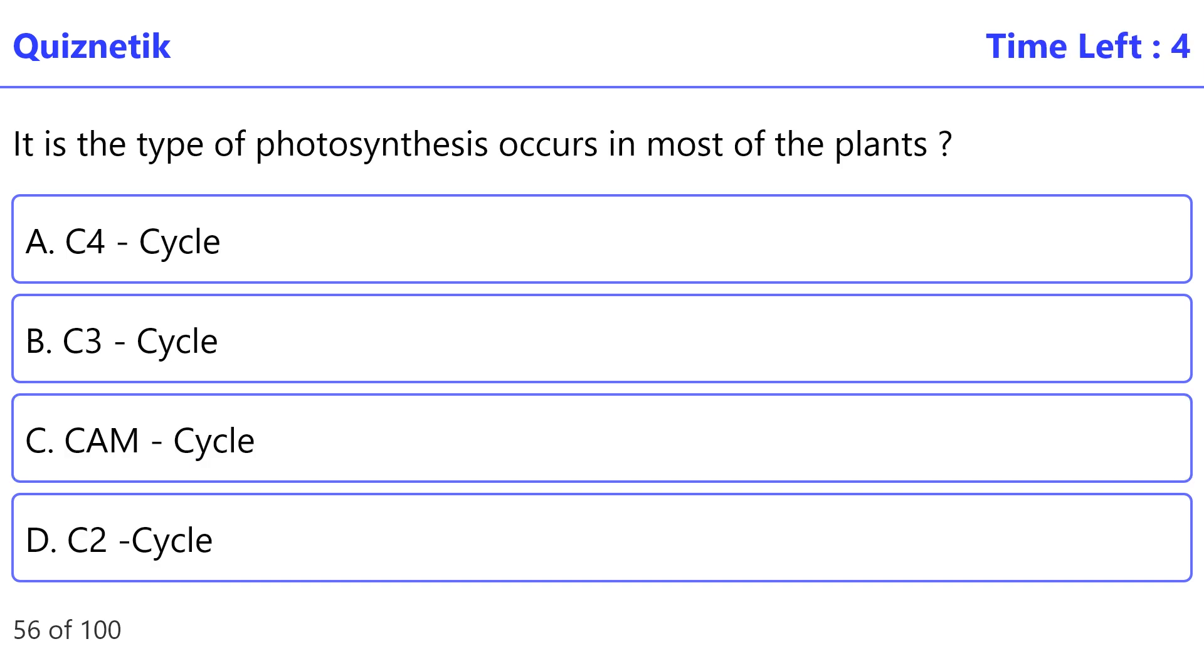It is the type of photosynthesis occurs in most of the plants. The correct option is B, C3 cycle.